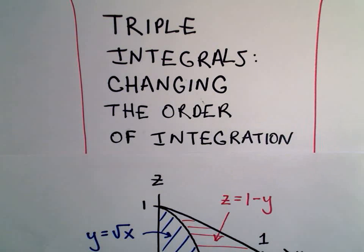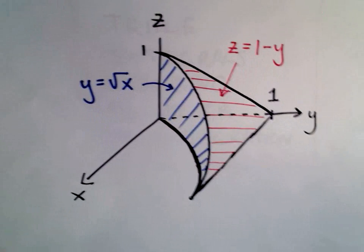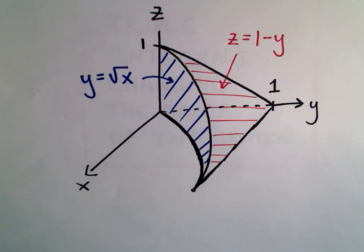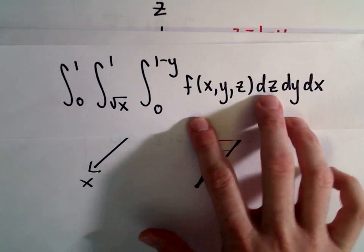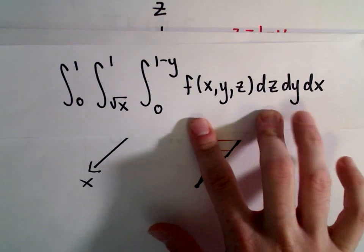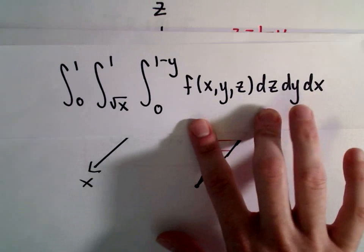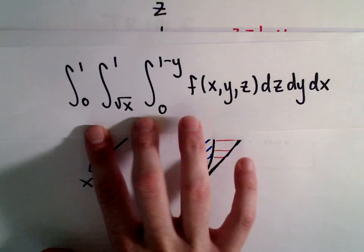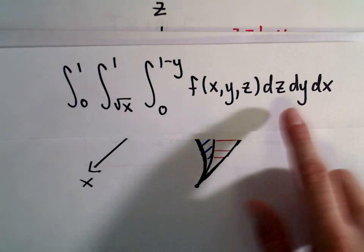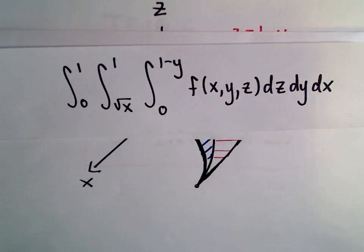Okay, this is going to be part two of my triple integrals, changing the order of integration videos. In the first part, we looked at integrating with respect to z first, then y, then x. This was all given to us. I explained why that made sense and then I switched the dy and dx.